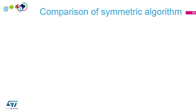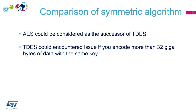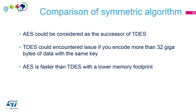We're finished with AES. We've seen chaining modes and counter mode. Now a short comparison: AES can be considered the successor to Triple DES. In any new system you'll probably use AES. Triple DES can have issues if you encode more than 32 GB of data with the same key — a known weakness. The main argument is that AES is faster than Triple DES with a lower memory footprint, so there's no major advantage to using Triple DES, though it still exists in some systems for compatibility.